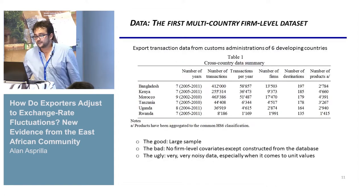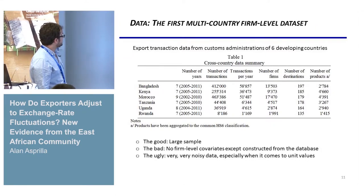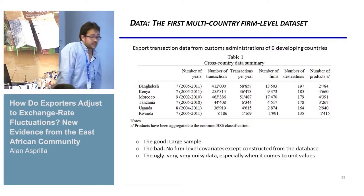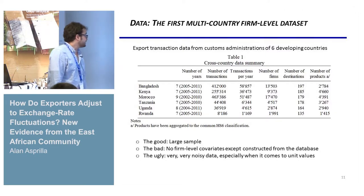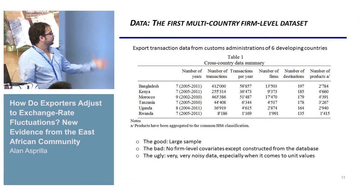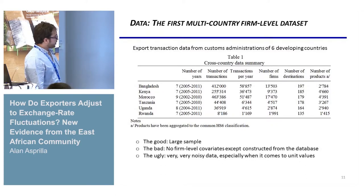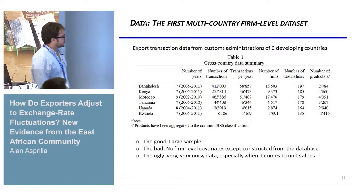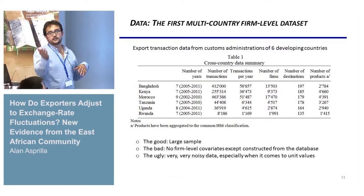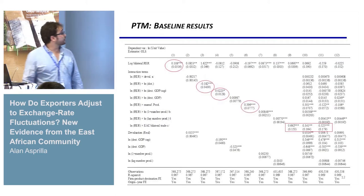Our dataset is very rich: six countries — Bangladesh, Kenya, Morocco, Tanzania, Uganda, and Rwanda — with almost more than one million observations. The downside is that we have no firm-level covariates beyond those from our database, and the data is very noisy with many measurement errors in volumes and prices. We clean the dataset by eliminating outliers and similar issues.